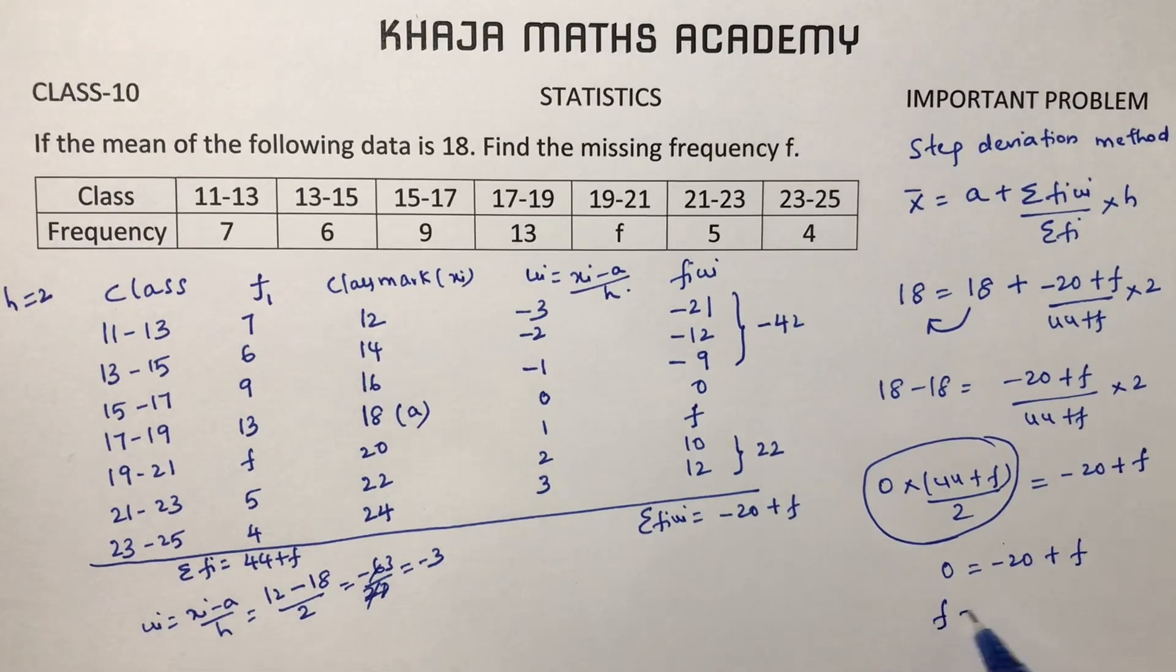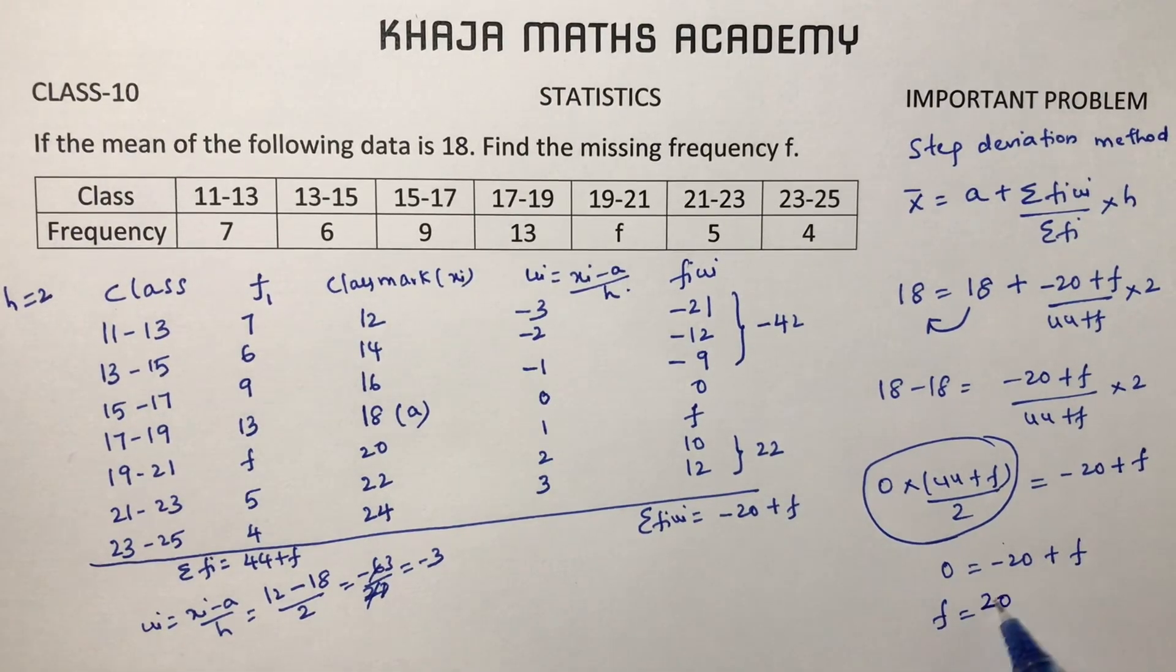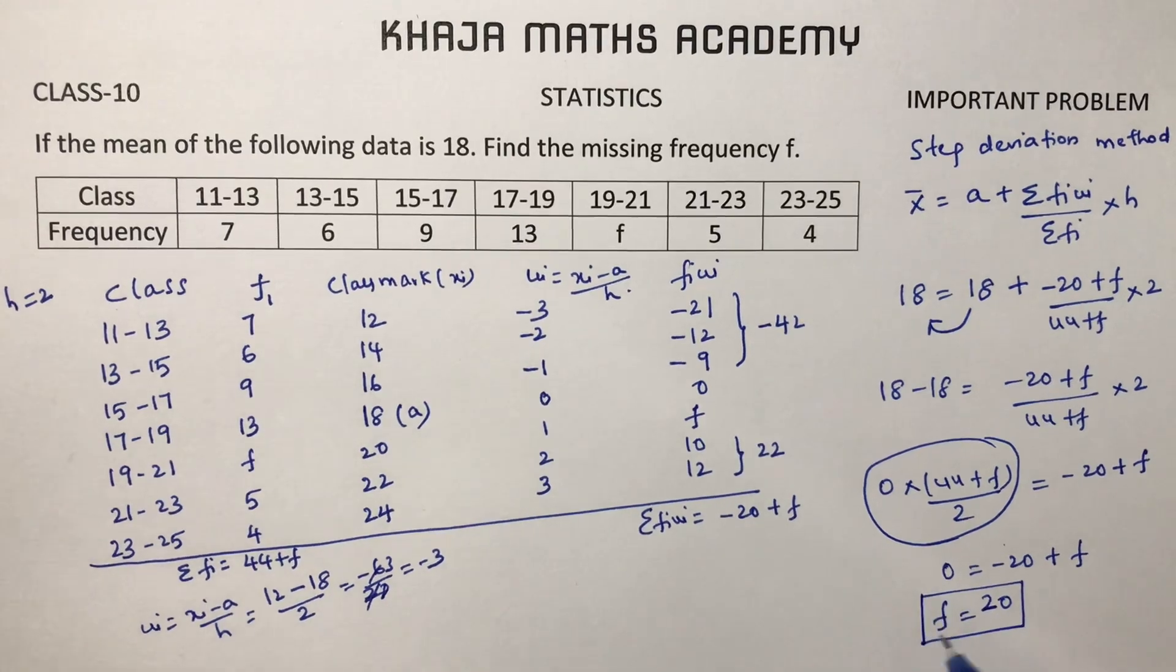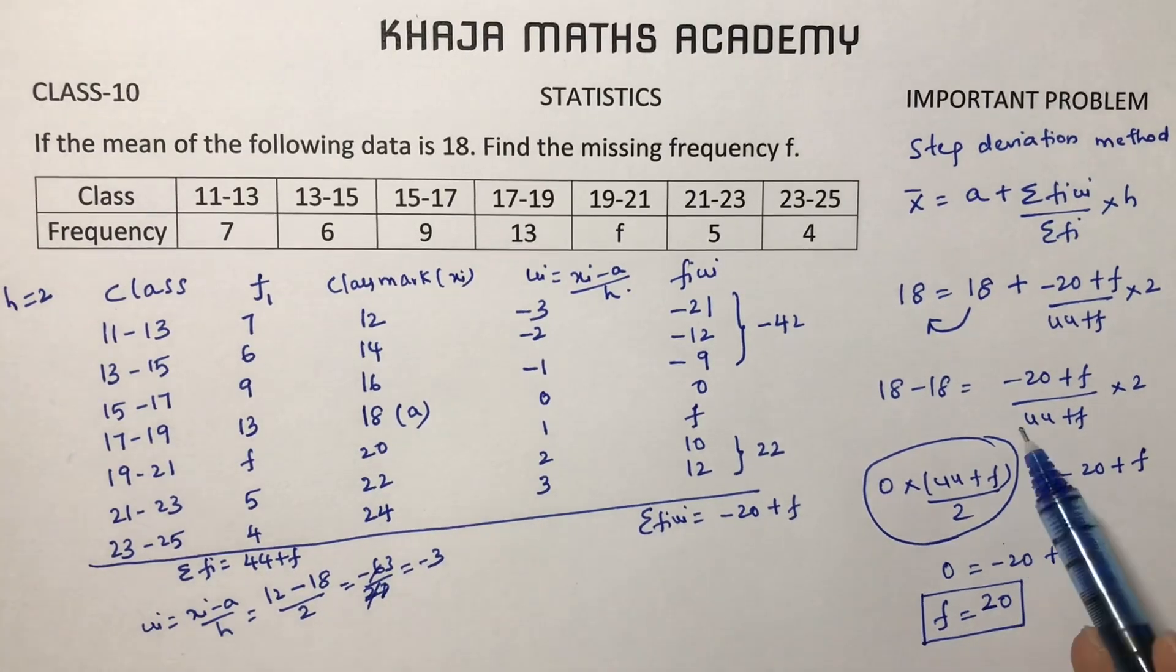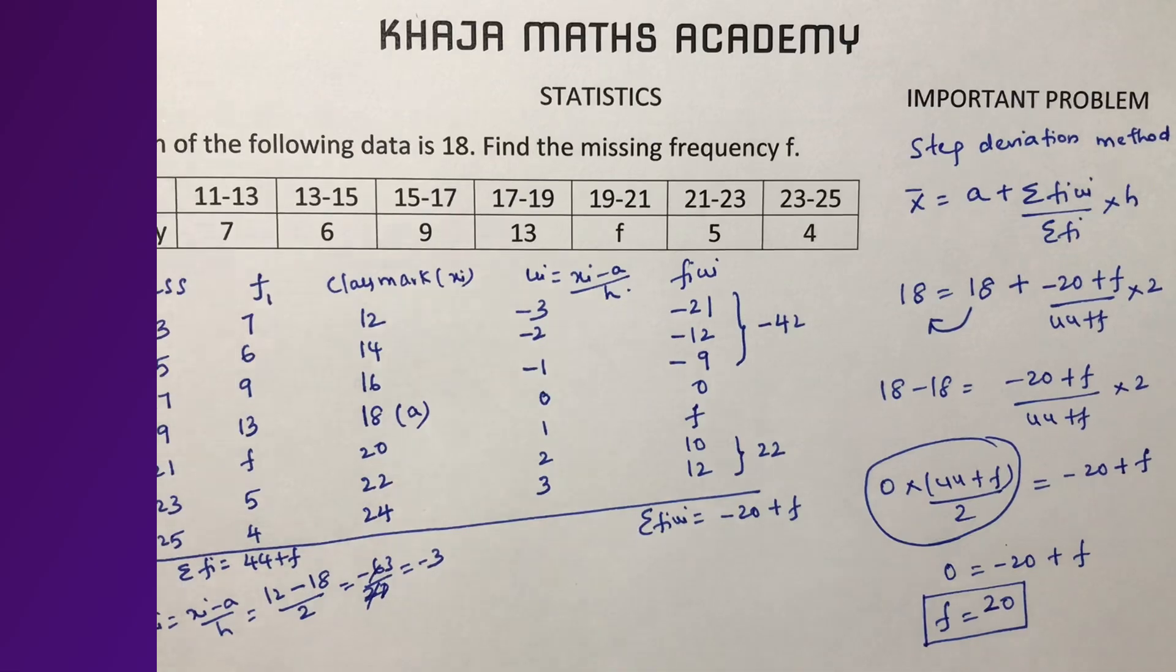On transposing, F equals 20. So the missing frequency F is 20. This problem I solved with the help of step deviation.